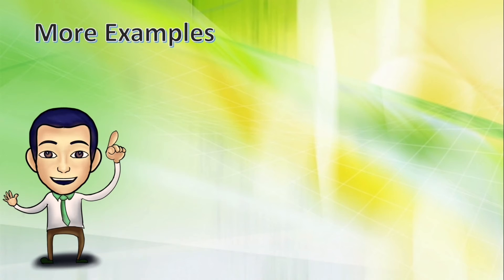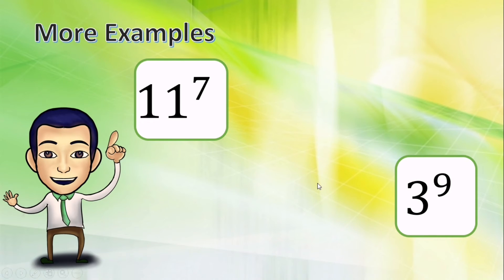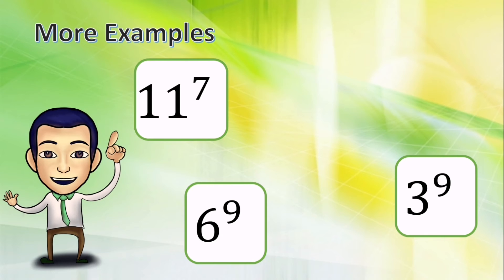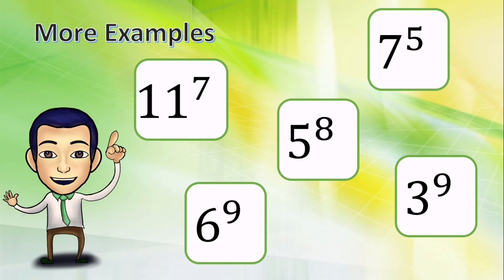Let's have these examples. How are we going to read this exponential notation? That's right — it's eleven raised to the seventh power. How about this? Very good — it's three raised to the ninth power. Can you name this one? It's six raised to the ninth power. How about this? Very good — it's seven raised to the fifth power. This one? That's right — it's five raised to the eighth power.